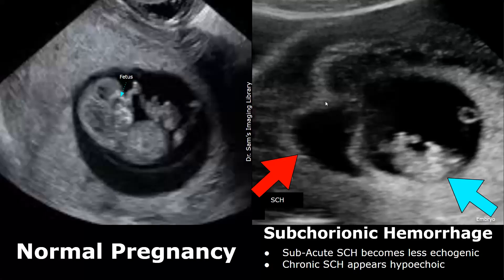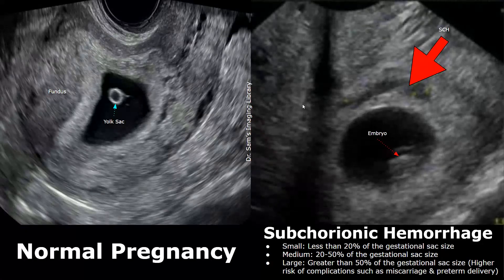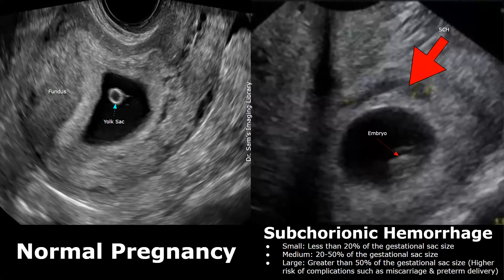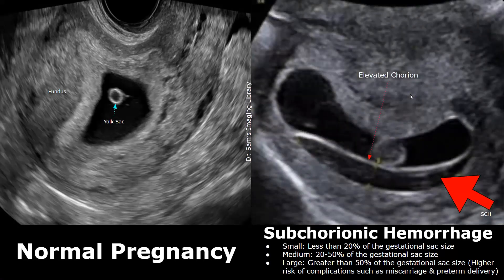This is a large hematoma. Subchorionic hemorrhage can be classified as small, medium, and large. Its size is compared with the gestational sac size. A small hemorrhage is less than 20% of the gestational sac size. A medium-sized hemorrhage will be 20–50% of the gestational sac size. A large hemorrhage will be greater than 50% of the gestational sac size, and carries a higher risk of complications such as a miscarriage or preterm delivery.